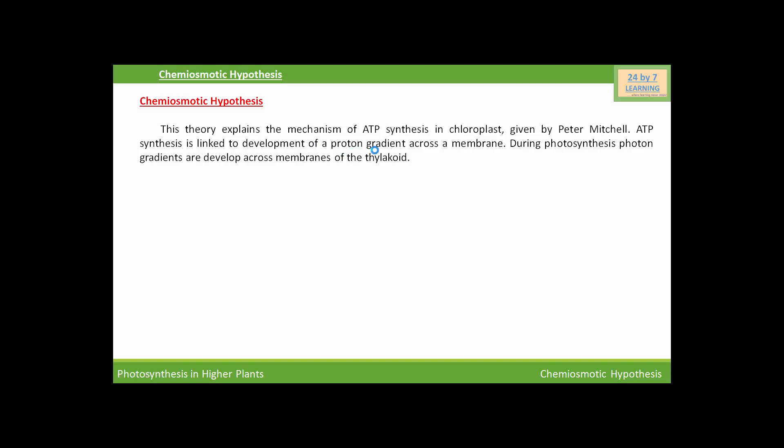ATP synthesis is linked to the development of a proton gradient across a membrane during photosynthesis. Proton gradients are developed across the membranes of the thylakoid due to the accumulation of protons into the lumen of the thylakoid. There are two reasons for proton accumulation in the lumen of the thylakoid. Number one is the splitting of the water molecule on the inner side of the thylakoid membrane.